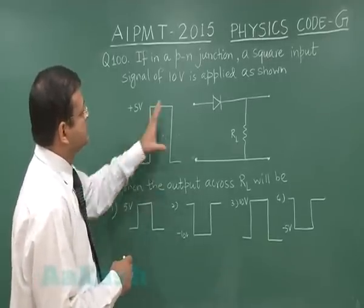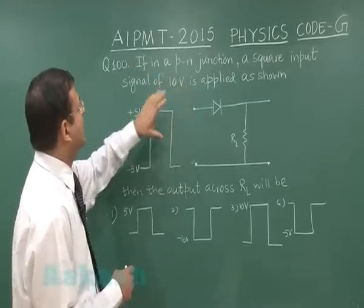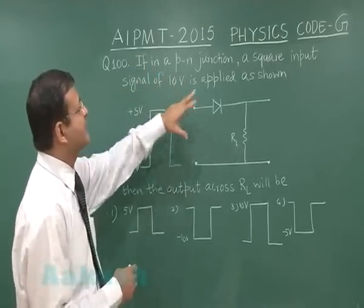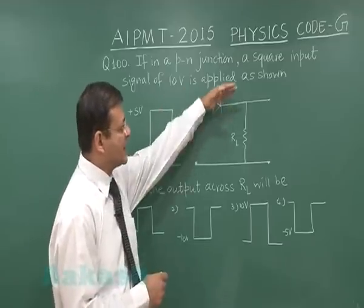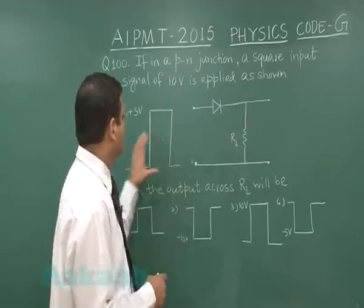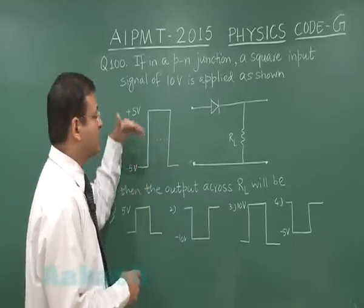Here a diode has been used. It says that in a PN junction, a square input signal of 10 volts is applied as shown. You have a circuit with a diode and a load resistance RL, and you're applying a voltage source varying from -5V to +5V.